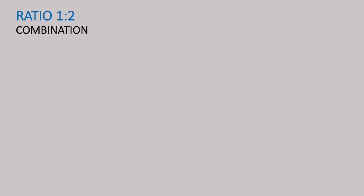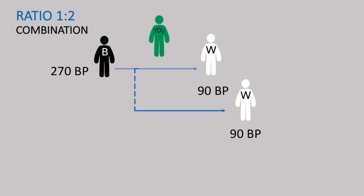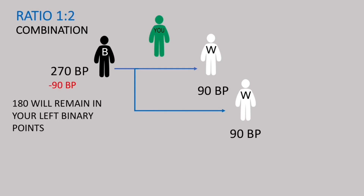What about the 1 to 2 combination package? This is you — you invite a black package on your left and two white packages on your right. The black package gets 270 binary points and both white packages get 90 binary points each. With the 1 to 2 ratio, to balance, 90 points are deducted from 270, and 180 remain on your left binary points. The total is 270 binary points, or 27 euros.